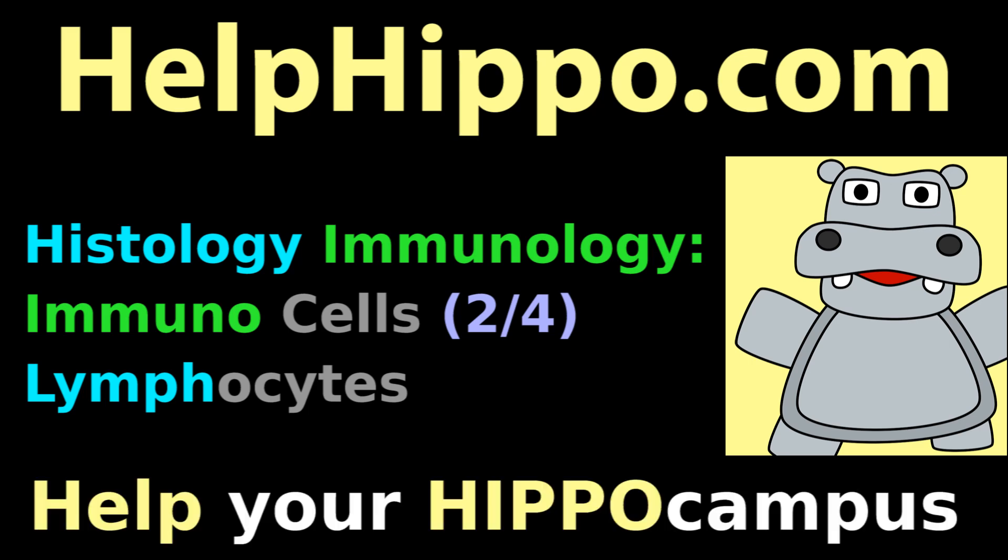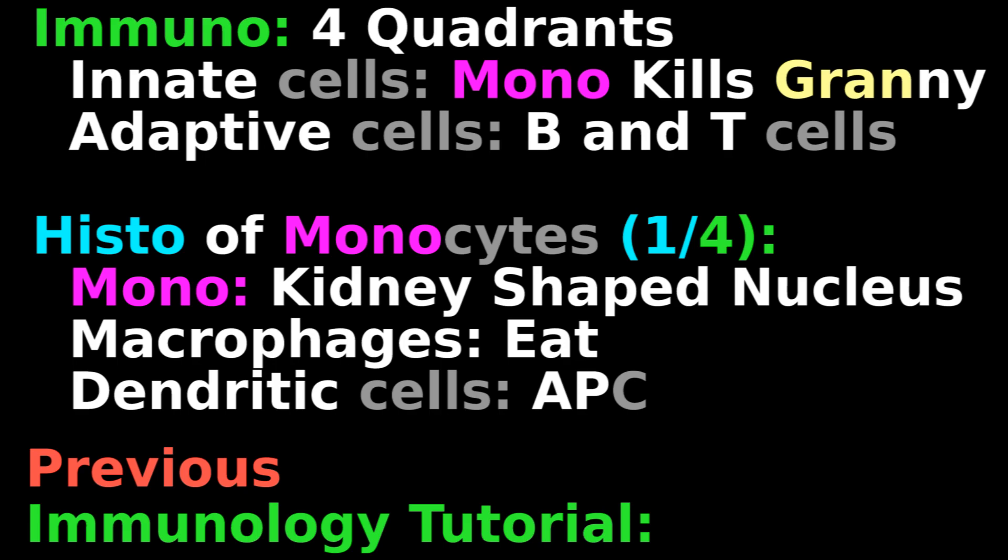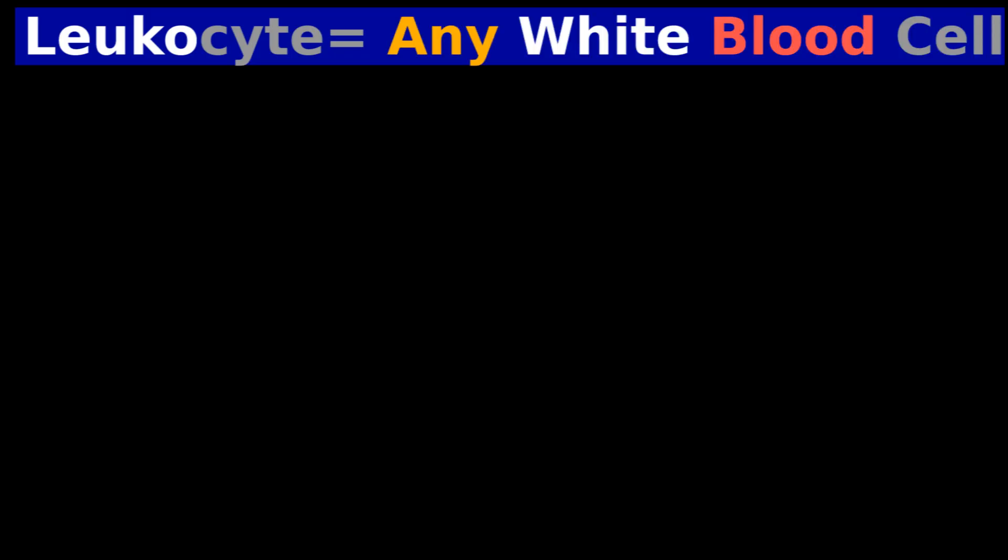Help Hippo, help your hippocampus. Help Hippo's previous immunology tutorial said this: A leukocyte is any type of white blood cell.